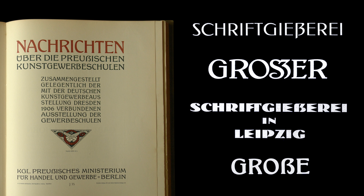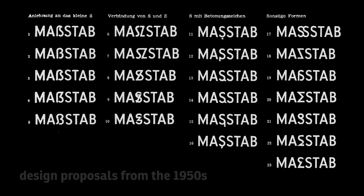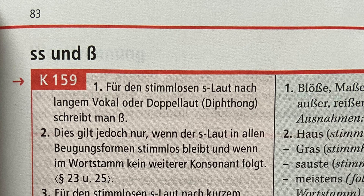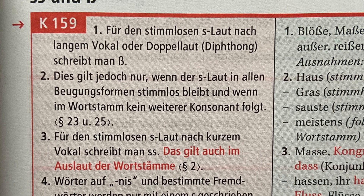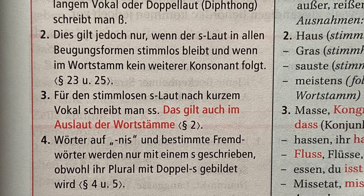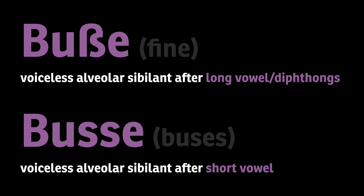The original plan for an official introduction of a capital sharp S came up several times during the 20th century in the trade magazines, but it didn't yield anything substantial. At the end of the 20th century, yet another spelling reform was passed and this affected the use of the sharp S character. Now fewer words used the sharp S, but for the remaining words the role of the character was actually strengthened — it now has an additional phonetic purpose, making it even more crucial to have an uppercase version to maintain the phonetic rules in uppercase-only typesetting.